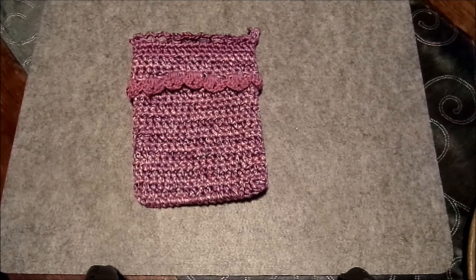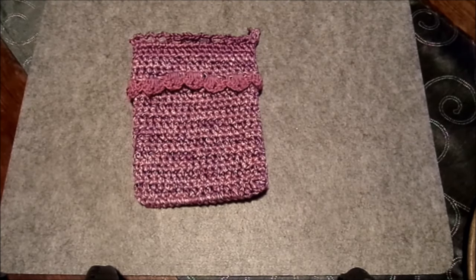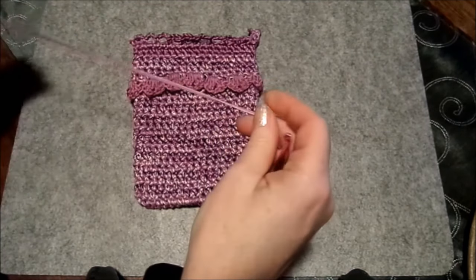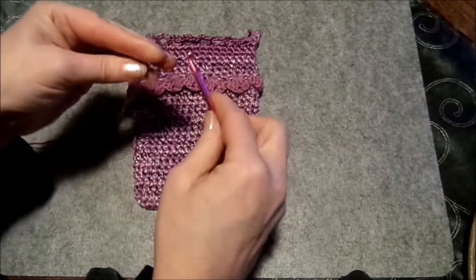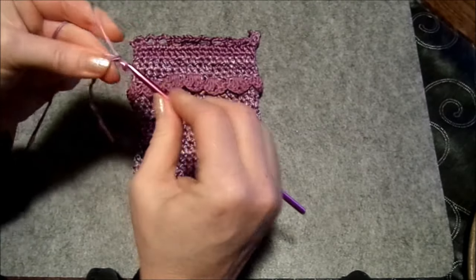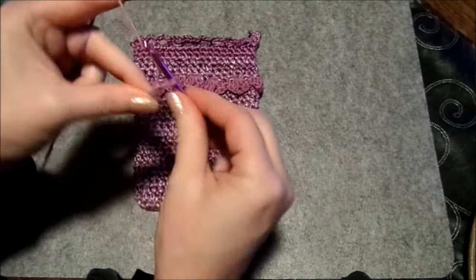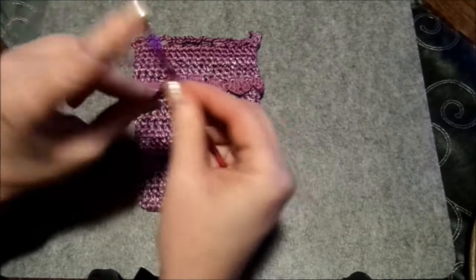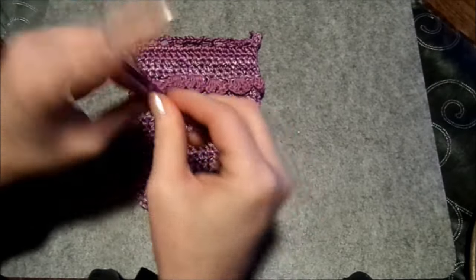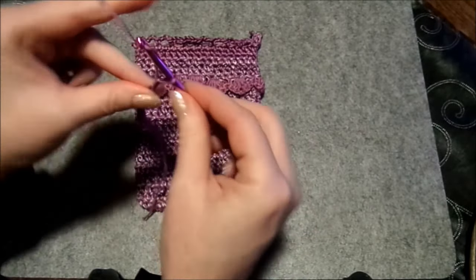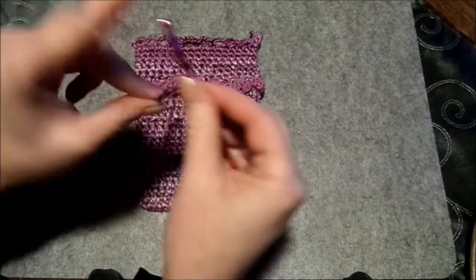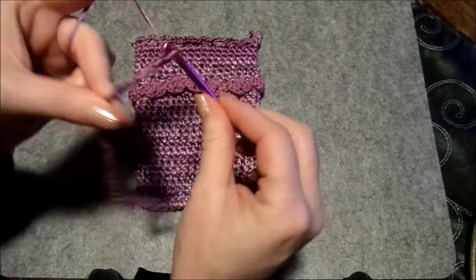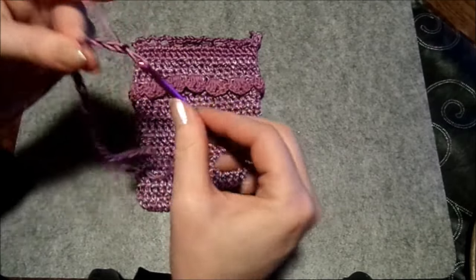So, noch ein Tipp von mir. Wenn du dann dein Stück fertig hast und du möchtest gerne ein Bindeband reinmachen, damit man das vielleicht schließen kann. Dann erst so 20 Luftmaschen. Eins, zwei, drei, vier, fünf, sechs, sieben, acht, neun, zehn, elf, zwölf, 13, 14, 15, 16, 17, 18, 19, 20. Können auch ein paar mehr sein. Weil damit kannst du dann wirklich super zubinden für praktische Sachen.